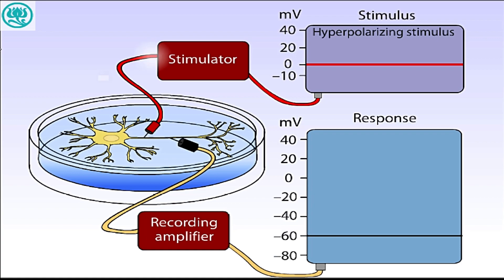Notice that a hyperpolarizing current drives the membrane potential in a negative direction, with the voltage response of the cell directly proportional to the magnitude of the injected current.